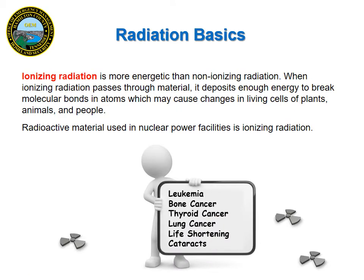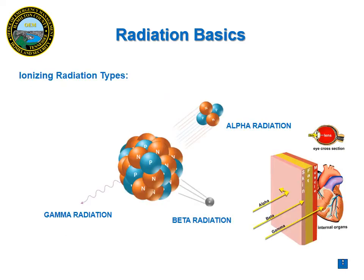As discussed earlier, ionizing radiation is the most dangerous. As it passes through an object, it can break down molecular bonds in atoms, which can lead to changes in living cells. These changes can cause different mutations in your cells that can lead to several different medical issues, such as cancer. There are three main types of ionizing radiation: alpha, beta, and gamma. The next slide will have a video going into this in more depth.